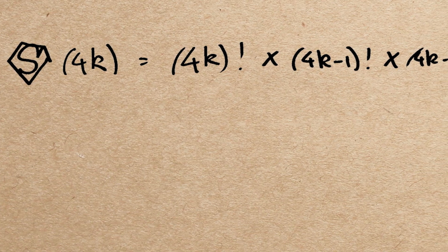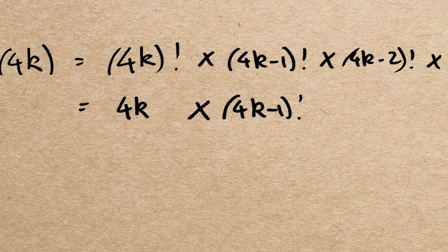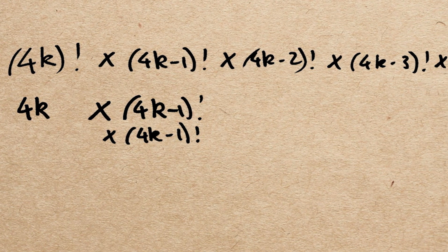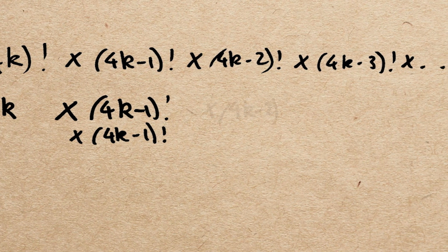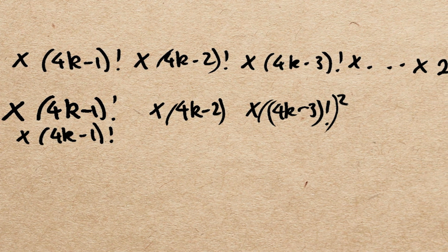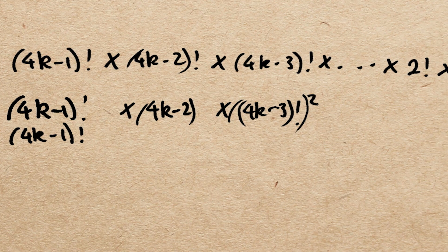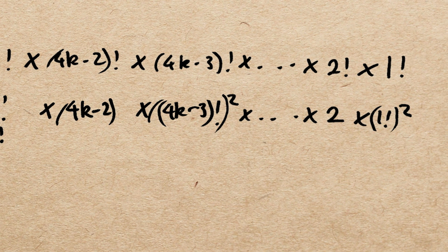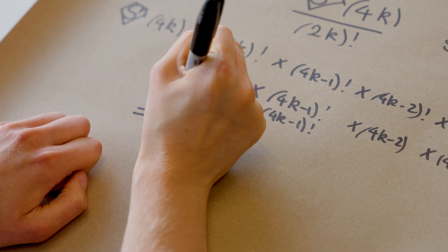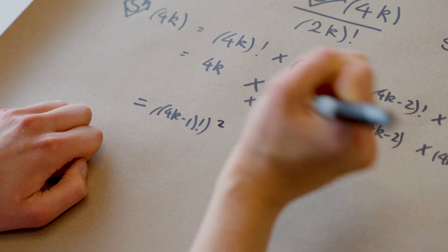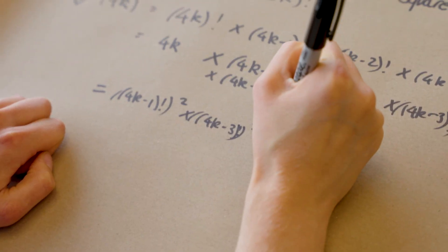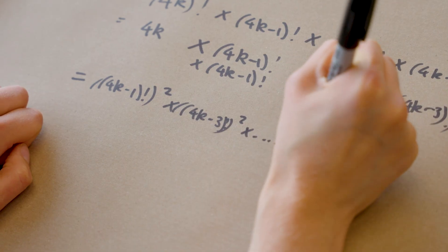And we can pair these up. So looking at this pair, we have 4k times 4k minus 1 factorial, times 4k minus 1 factorial. So we've got 4k minus 1 factorial squared here, and then here, we've got times 4k minus 2 times 4k minus 3 factorial squared, and so on, times 2 times 1 factorial squared. So what we get in total is 4k minus 1 factorial squared, times 4k minus 3 factorial squared, times dot dot dot, times 1 factorial squared.